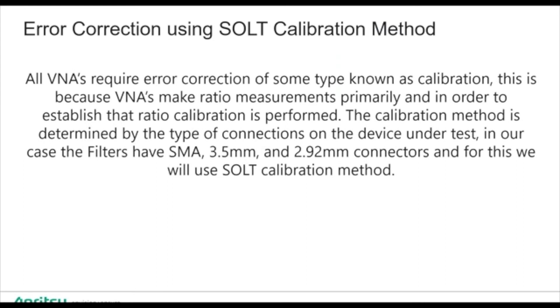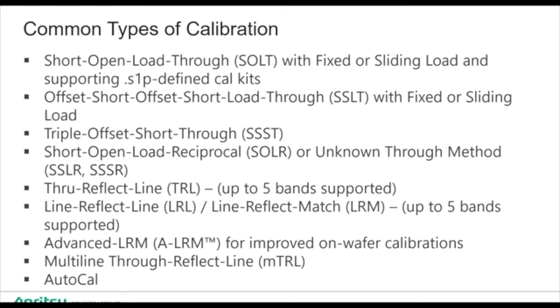Once we set the parameters for the VNA, we have to apply error correction or calibration. In today's case, the devices we're going to measure are SMA 3.5 millimeter, 2.92 millimeter, so we'll be using a 36524A calibration, a mechanical calibration kit. You should know that when you perform the calibration, that's going to be determined by the device under test. You may have filters that need to be measured on a probe station, you may need to measure waveguide and many other types of calibration. The ones that we see here are all supported on the VectorStar.